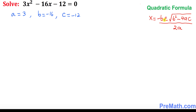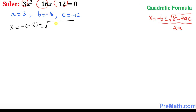Here's the quadratic formula that we will be using, and here are our coefficient a, b, and c values, where a is 3, b is negative 16, and c is negative 12. Let's go ahead and start plugging in and solving for x. Everything is divisible by 2 times 3.